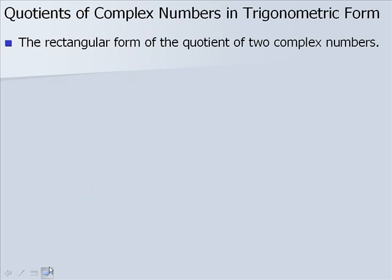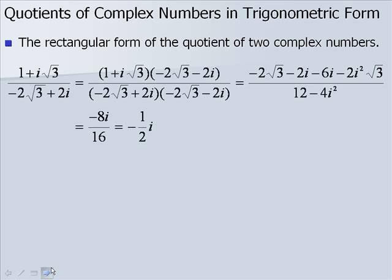Now let's look at quotients of complex numbers. In rectangular form, when dividing two complex numbers we multiply the numerator and the denominator by the complex conjugate — that is, our complex number with the sign in the middle changed to subtraction. We FOIL out the top, combine like terms, and change i squared to negative 1. We get negative 8i in the numerator and 16 in the denominator, giving us negative one half i.